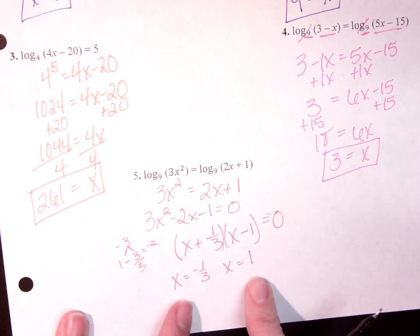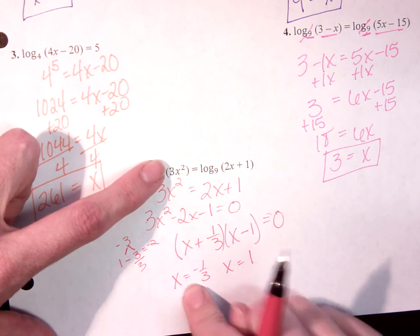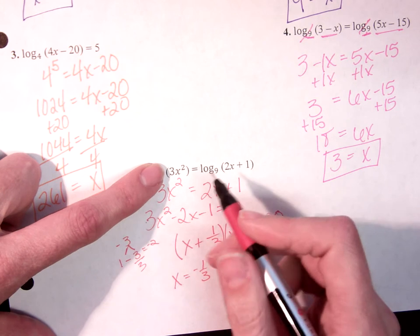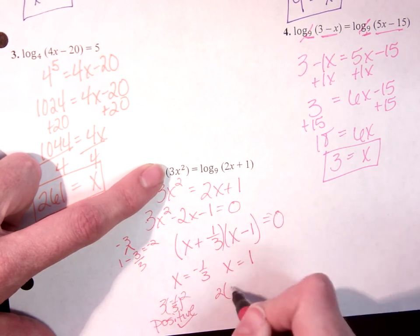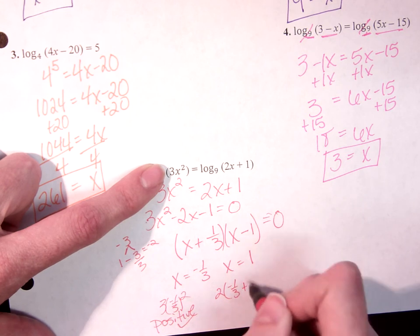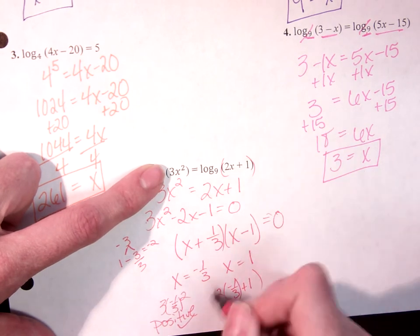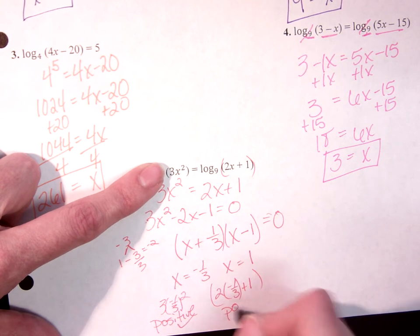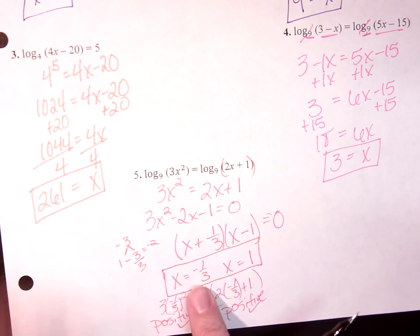Now with logarithms, I cannot raise a positive number to any power and ever get a negative. So we always have to go back and check and make sure just because this is negative, it doesn't make it wrong. It doesn't make it not usable. I have to plug it back in. 3 times negative 1 third squared, that's still going to be positive. And 2 times negative 1 third plus 1 from in this set. If I do negative 2 thirds plus 1, I'm still going to get a positive answer. So that means I can use both. x can be either negative 1 third or x can equal 1.